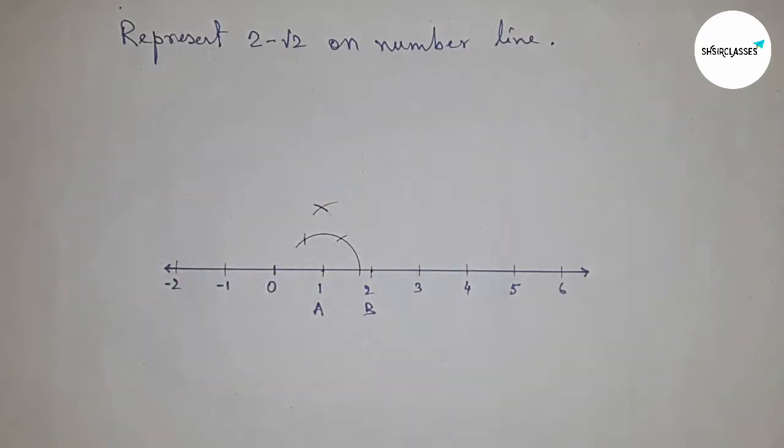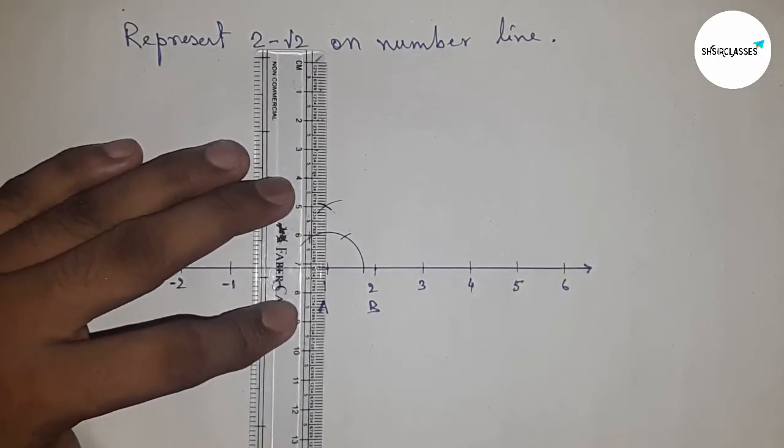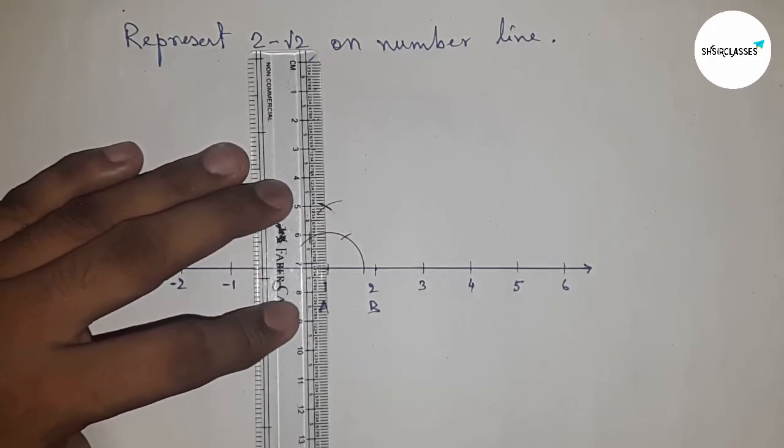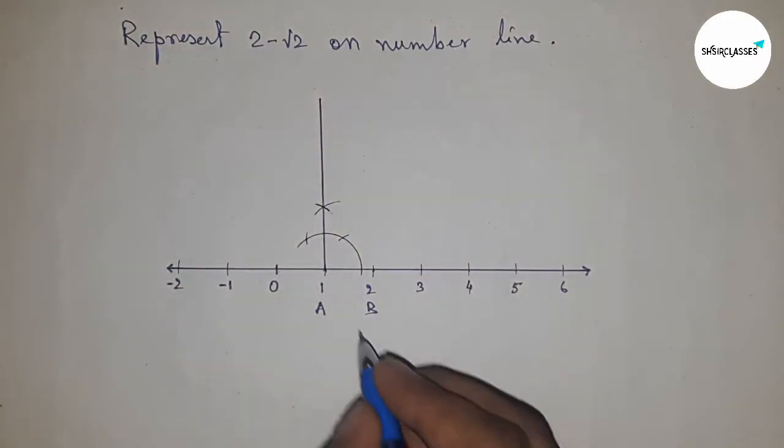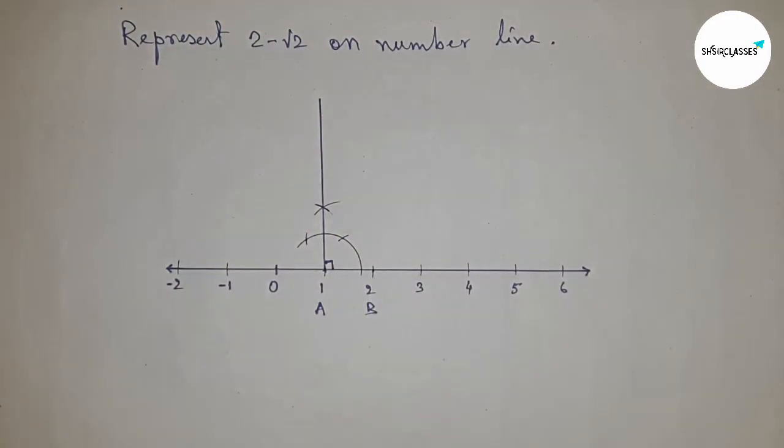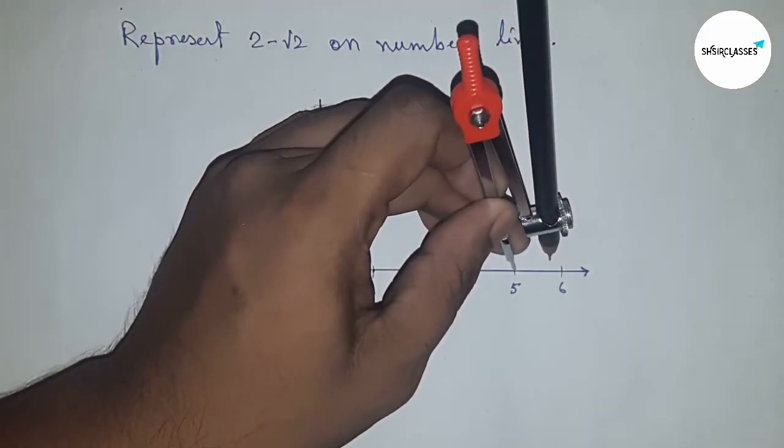Now constructing 90 degrees on point one. We got a 90-degree angle at point one. Next, taking the length between any two numbers.